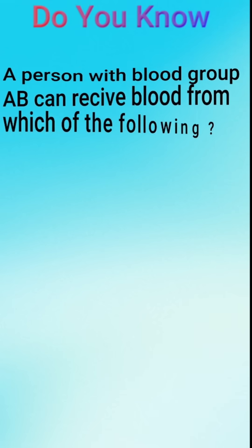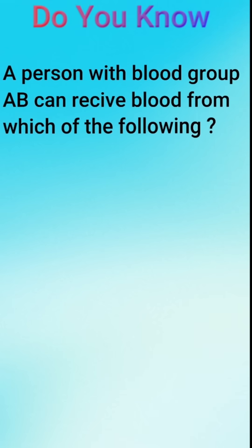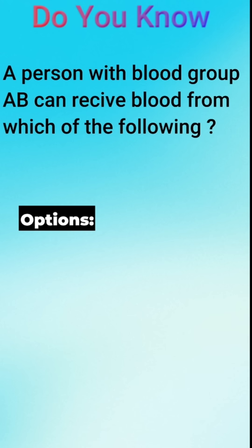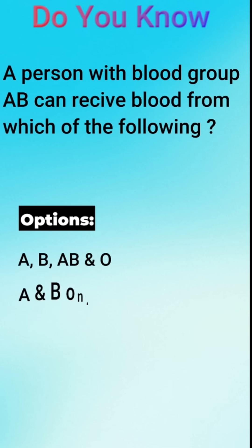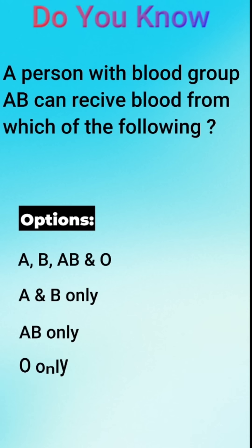A person with blood type AB can receive blood from which of the following? The options are: A, B, AB and O; A and B only; AB only; or O only.